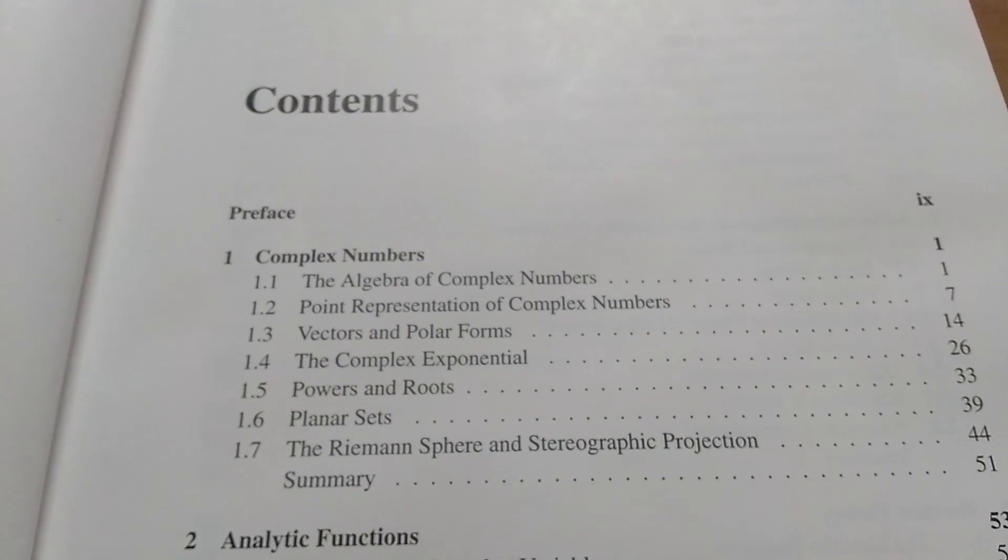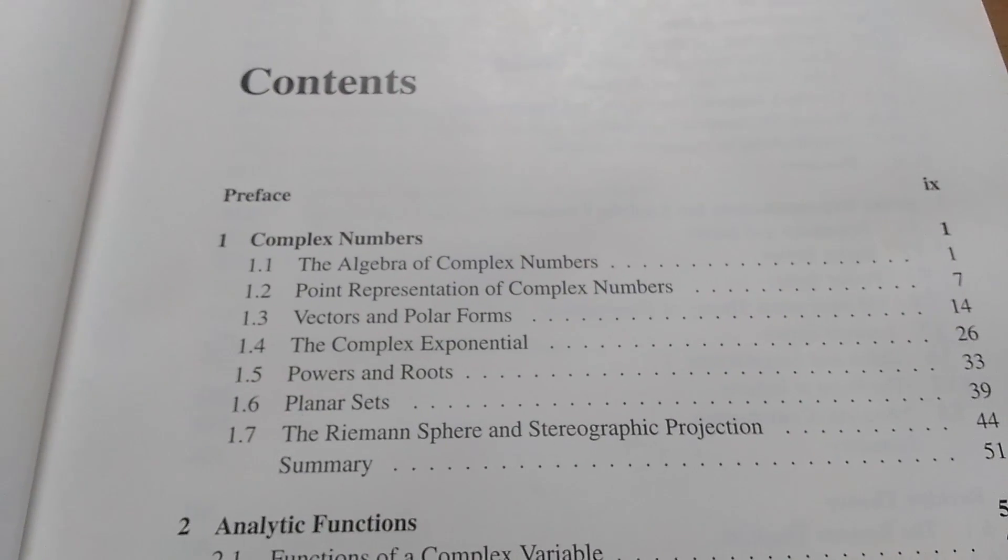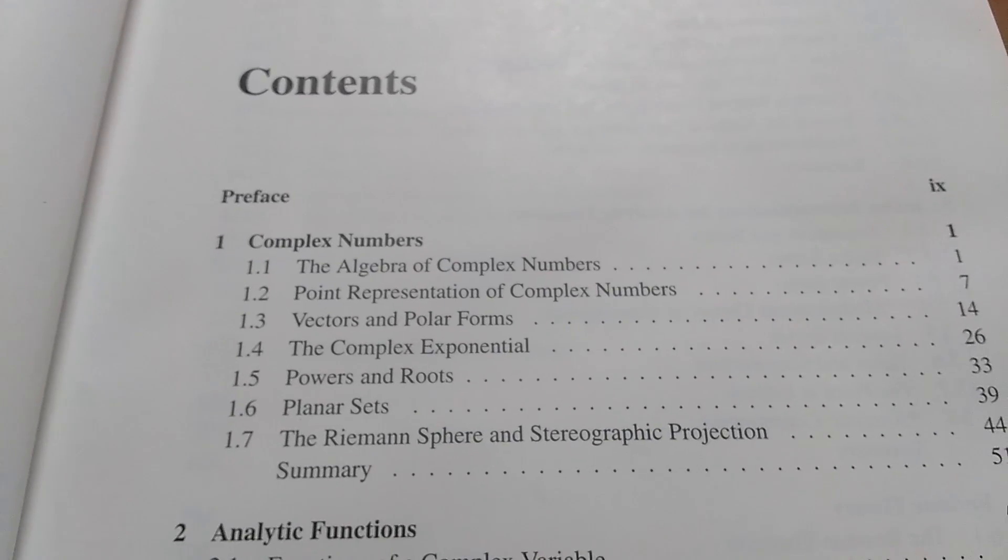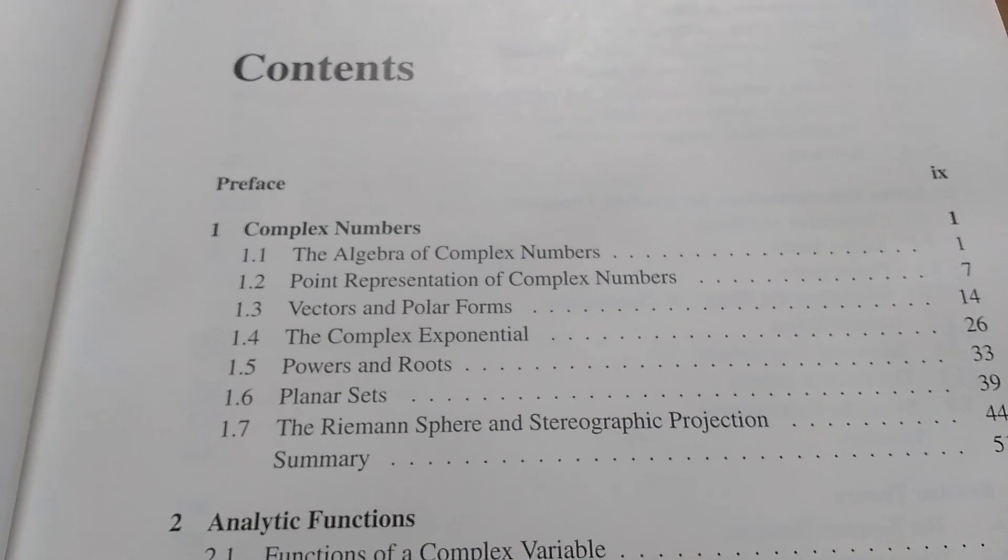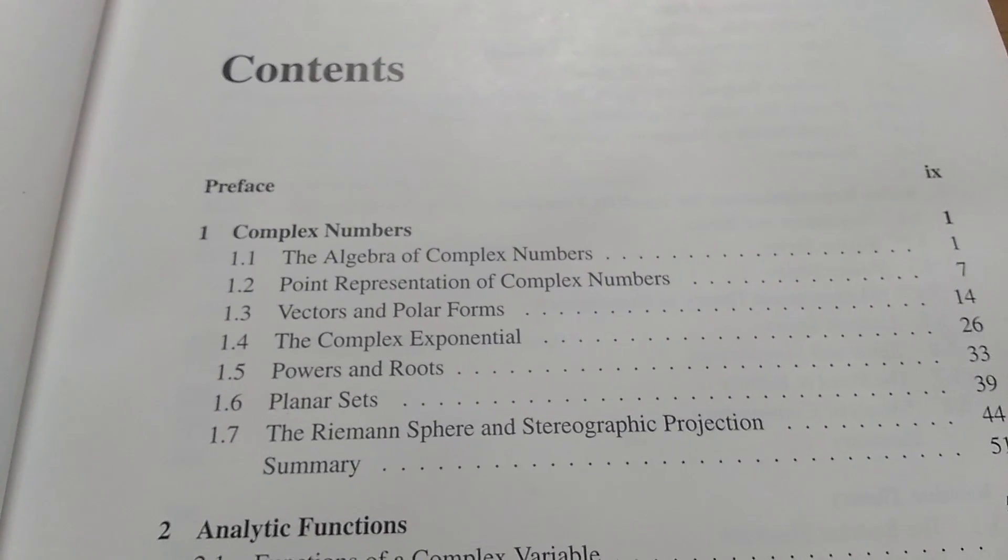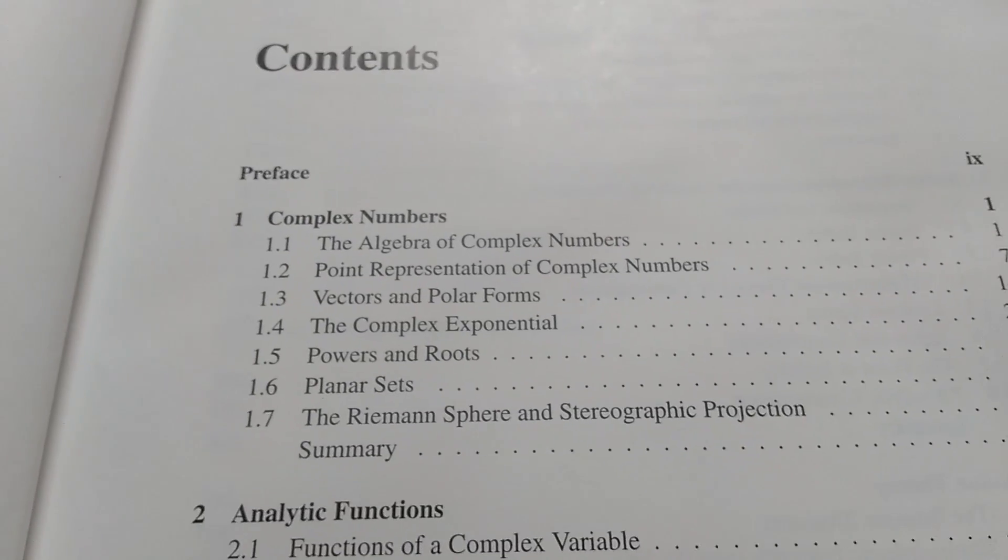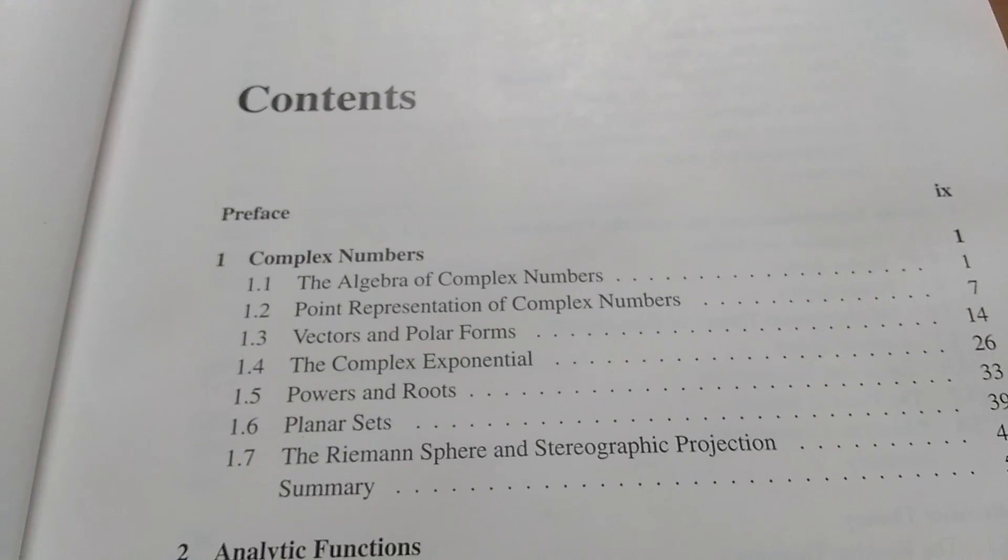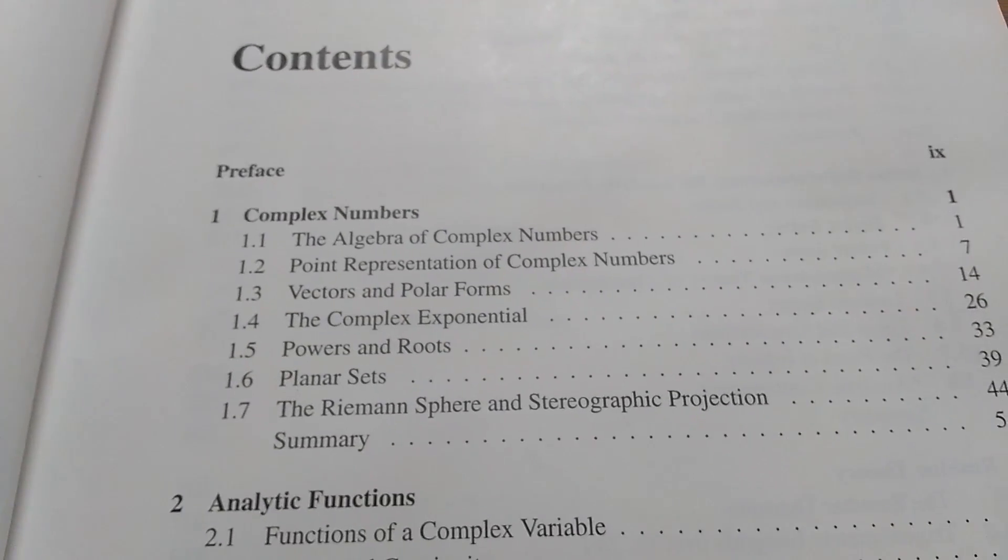So this is the Table of Contents. It starts from the very beginning with the algebra of complex numbers. So it makes you feel good about yourself, because you'll understand most of it. I think the trickiest thing at the beginning of the book is when you get to the argument of a complex number.